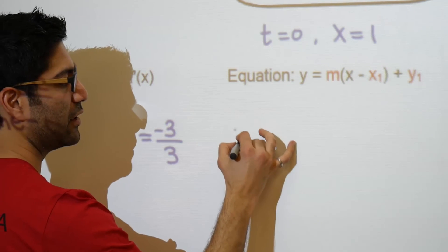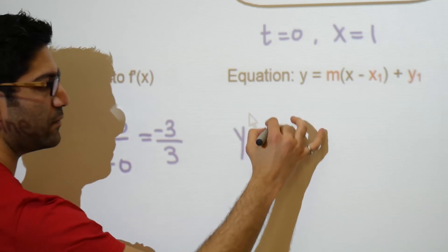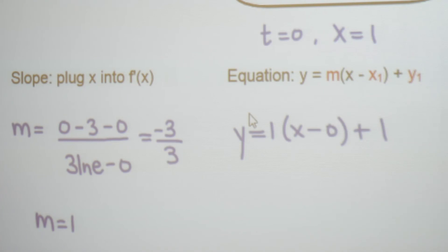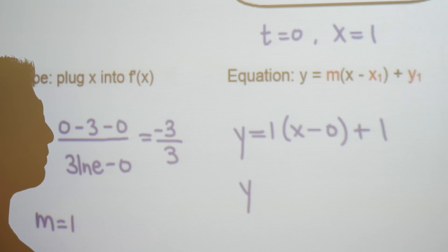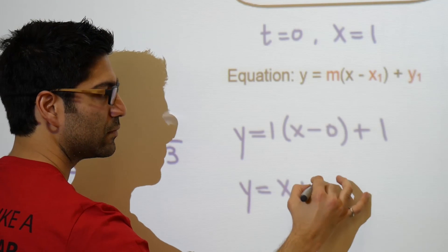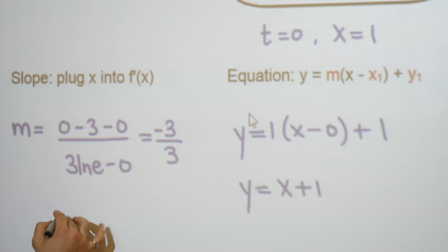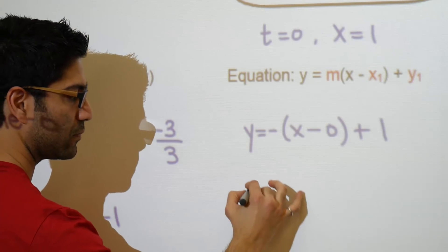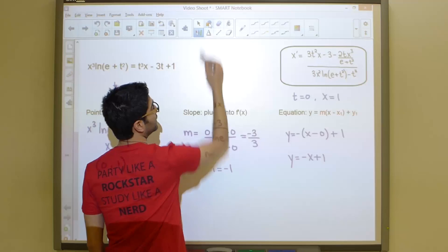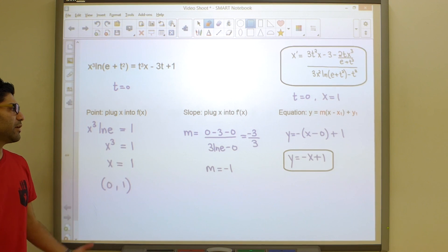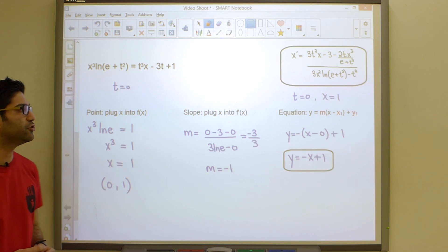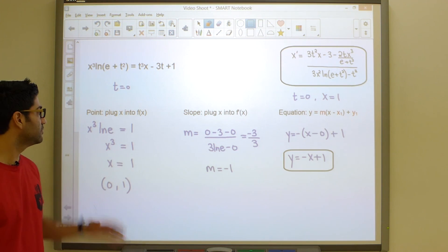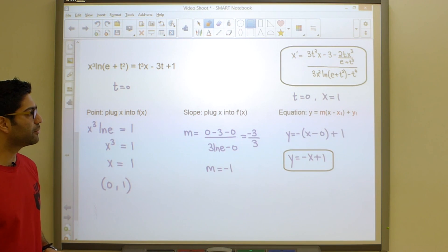Take these values and plug them into the point-slope equation: y minus y1 equals m times (x minus x1). With m equals negative 1, x1 equals 0, and y1 equals 1, that gives y minus 1 equals negative 1 times (x minus 0), or y equals negative x plus 1. I made a mistake earlier calling m equal to 1 — it is negative 1, so let's correct that. This method of finding the equation of a tangent line applies to any function, not just implicitly defined ones. Anytime they ask for a tangent line, use these three steps.